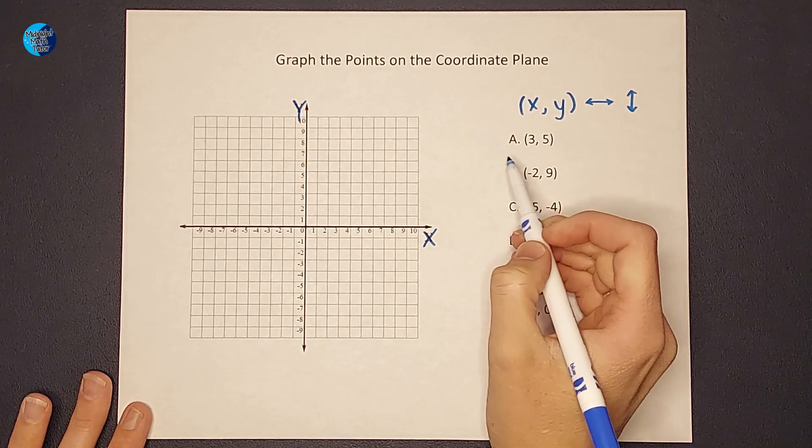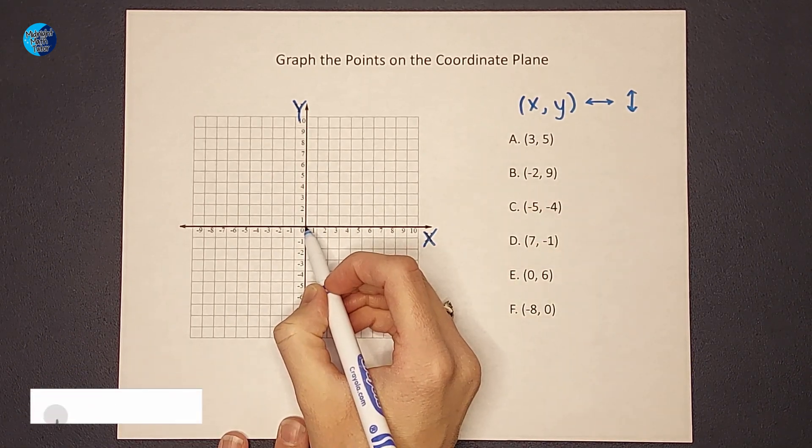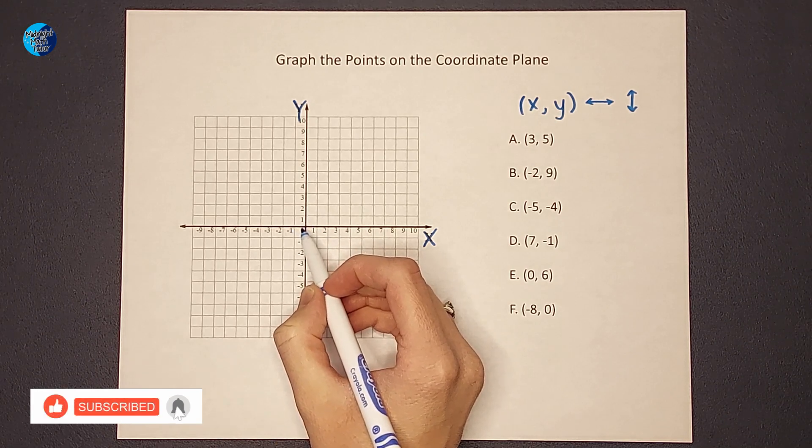So when I look at A, I always start at 0, 0. Right here where the two axes cross, it's also called the origin.